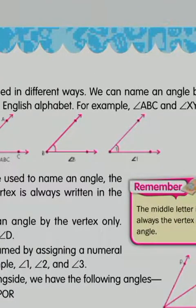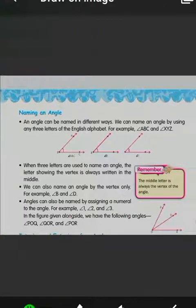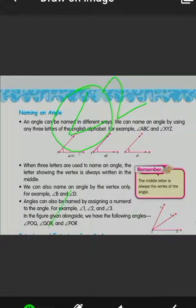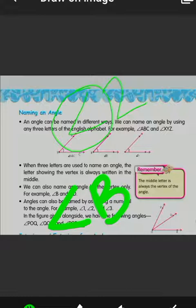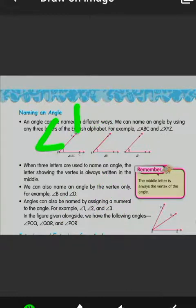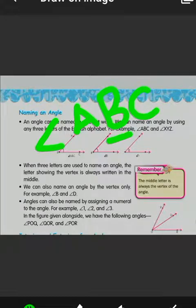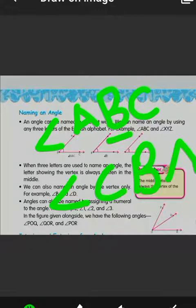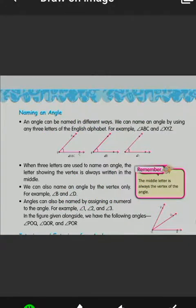You can also write angle 2 or any number. This symbol is used for denoting angle. So in the second figure there is angle B, and in the first is angle ABC. Always keep in mind that B will be in the center because B is the vertex of the angle. We can also write it as angle CBA — the vertex always stays in the center.